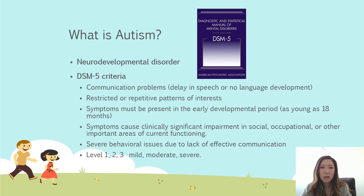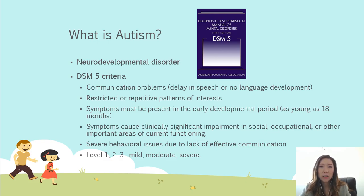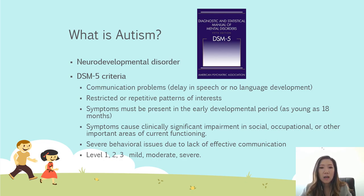Symptoms must be present in the early developmental period. You can definitely see some characteristics of autism as young as 18 months, though your child might not be diagnosed until they turn two and a half or three. Your child might not make eye contact, might not be aware that you're there, or have a delay in speech by 18 months. Other symptoms can cause clinically significant impairment in social, occupational, and other important areas of functioning, such as social skills and self-help skills. There are three levels — one, two, and three — mild, moderate, and severe.